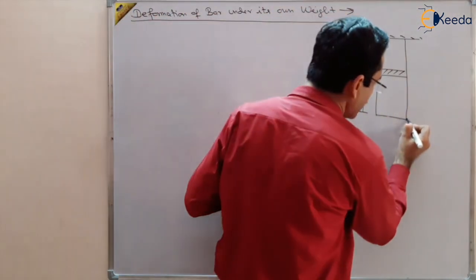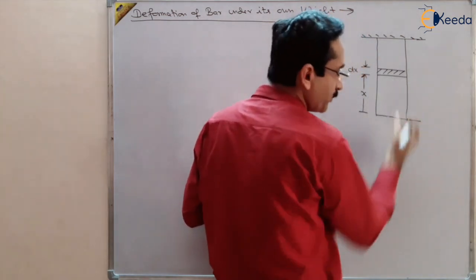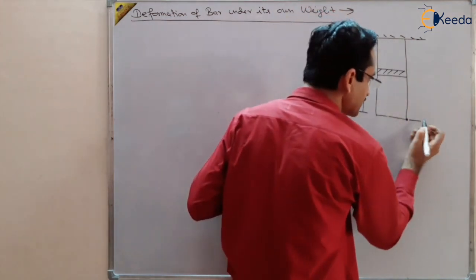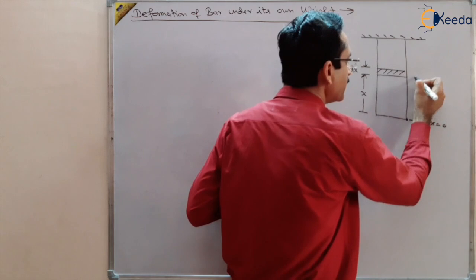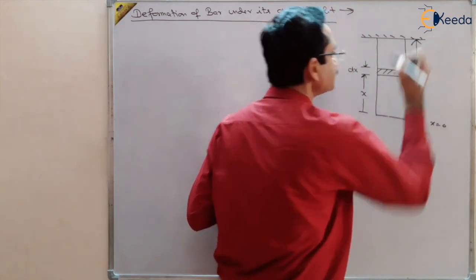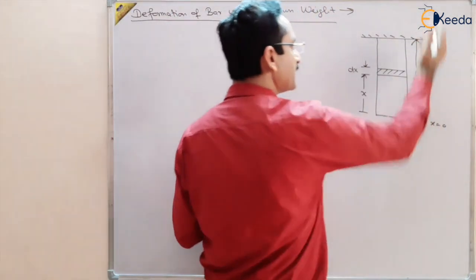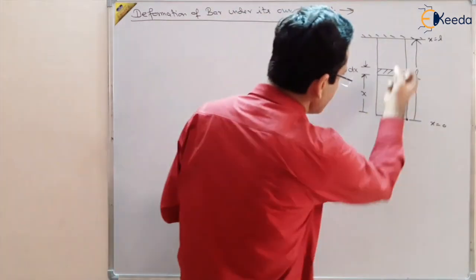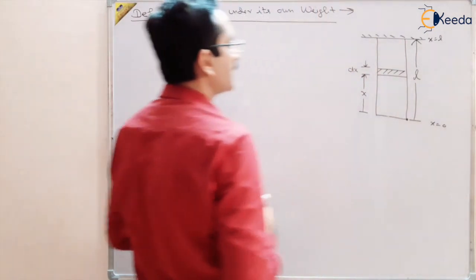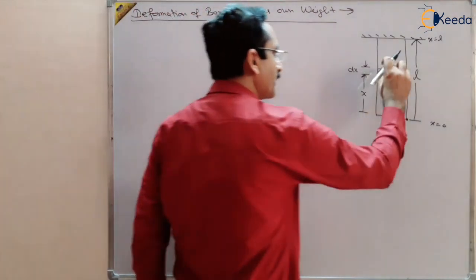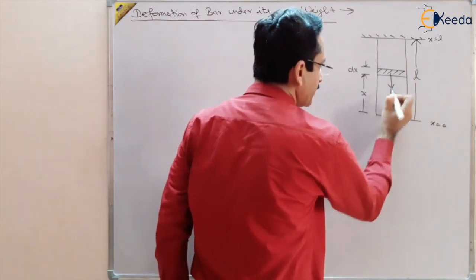We are taking 0 at the bottom and starting the length from there upward, because the lower part is pulling this body downward. This is our reference point at x = 0, moving upward, and suppose the total length of the body is L. So from x = 0 to x = L, we want to find the deformation. The lower part of the body pulls downward, trying to elongate the body. Suppose this small element dx is acted upon by weight wx.